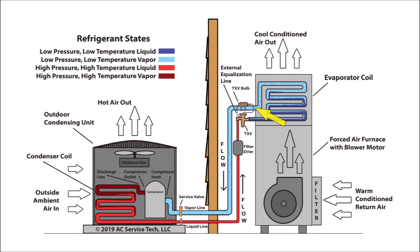Now you have a low pressure, low temperature vapor refrigerant exiting the evaporator coil, and it continues through the large vapor line until it gets to the vapor service valve. Then the low pressure, low temperature, superheated vapor re-enters the compressor and the refrigeration cycle starts all over.